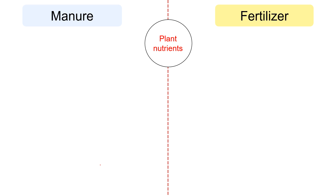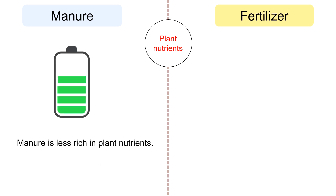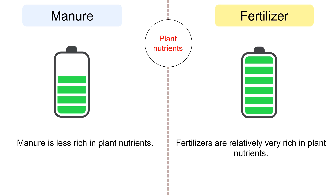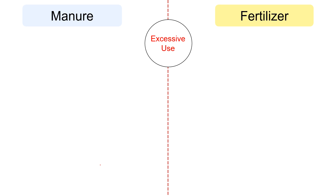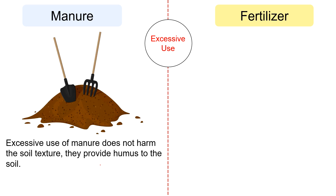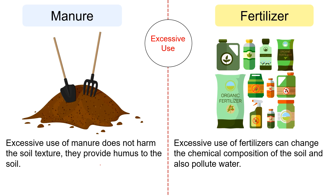In terms of plant nutrients, manure is less rich in plant nutrients, whereas fertilizers are relatively very rich in plant nutrients. Regarding excessive use, excessive use of manure does not harm the soil texture — in fact, it raises the quality of soil in the long run. In contrast, excessive use of fertilizers can damage the soil composition and also pollute water, decreasing the effectiveness of the soil as well as causing harm to the organisms present in the soil.